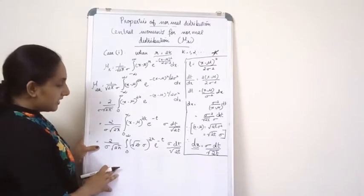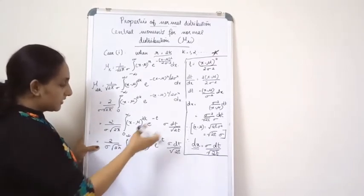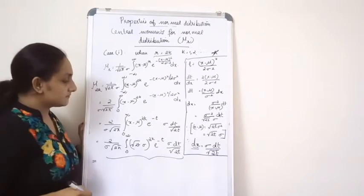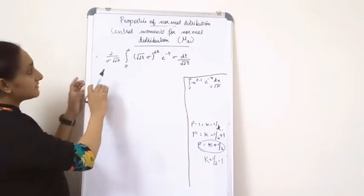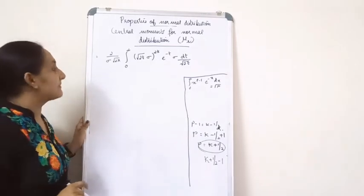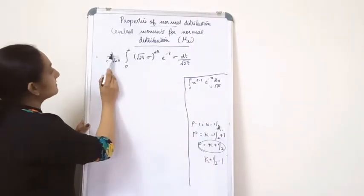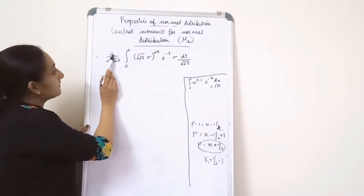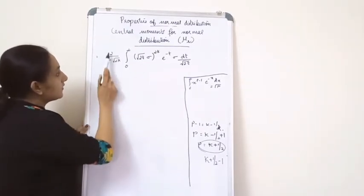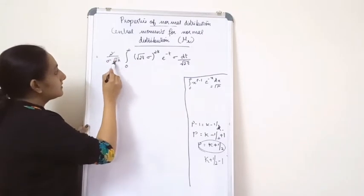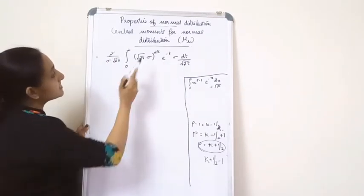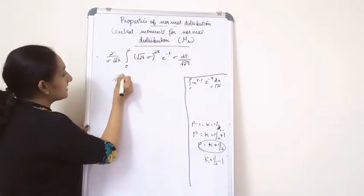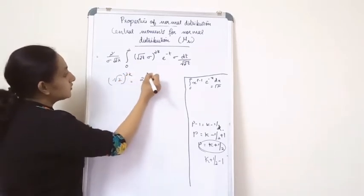There are many terms in common that can be cancelled. Taking the terms of 2: we have root 2 raised to 2k, which equals 2 raised to k. The sigmas cancel. What remains involves root pi, and we combine the t terms: root t raised to 2k is t raised to k, and root t in the denominator is t raised to 1 by 2, giving t raised to k minus 1 by 2.